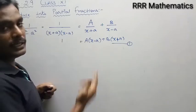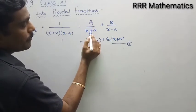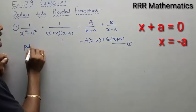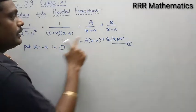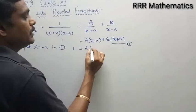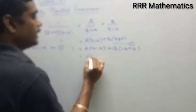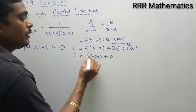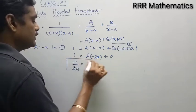Now equate the denominator factor for A: set x plus a equal to zero, giving x equal to minus a. Substitute x equal to minus a: we get 1 equals A times minus a minus a plus B times zero. That gives 1 equals A times minus 2a, so capital A equals minus 1 divided by 2a.